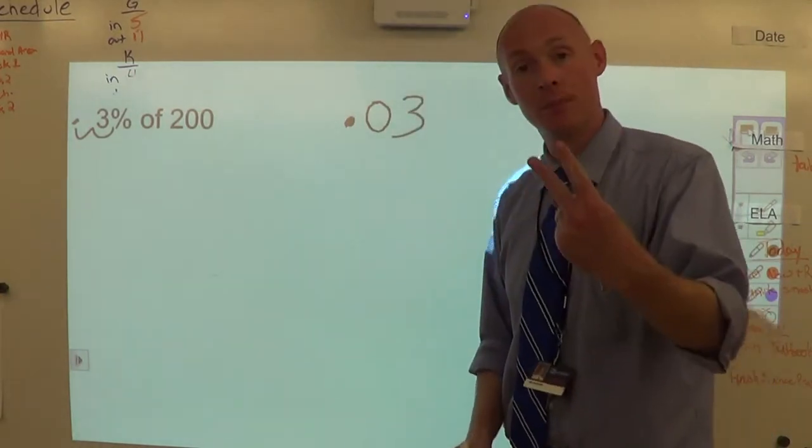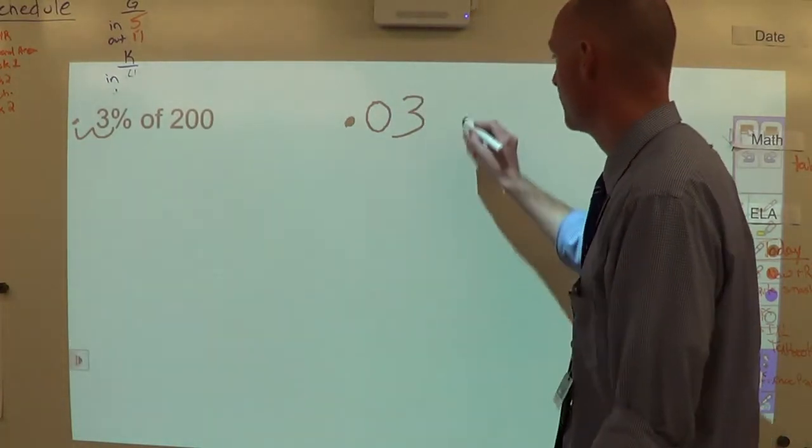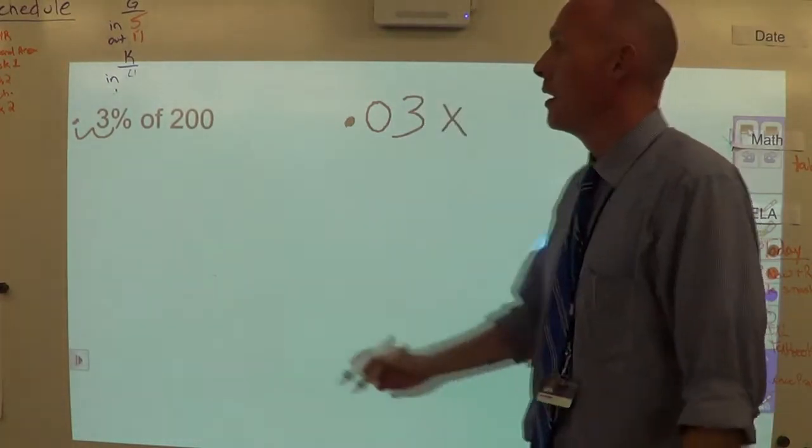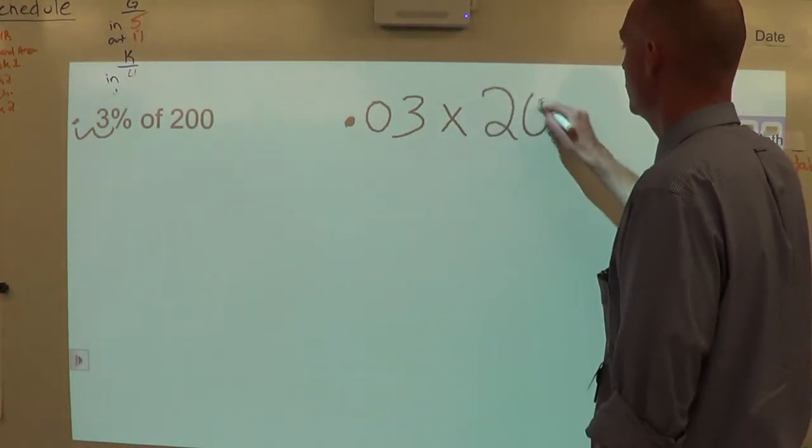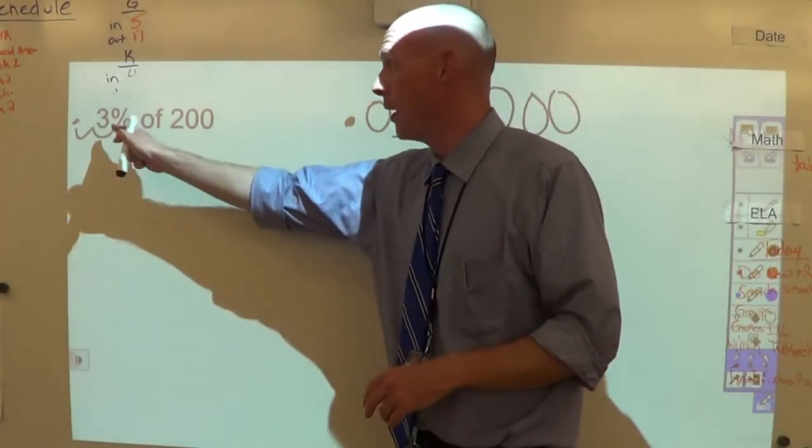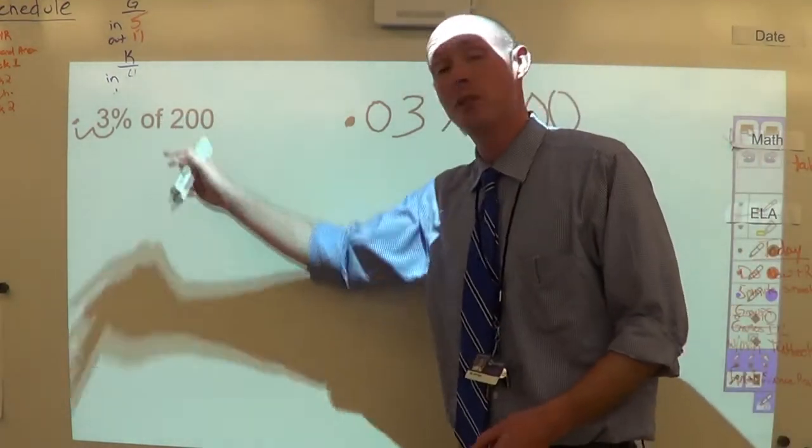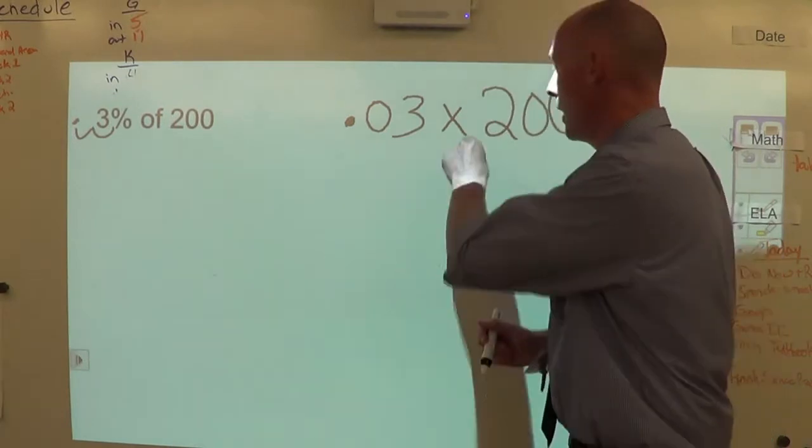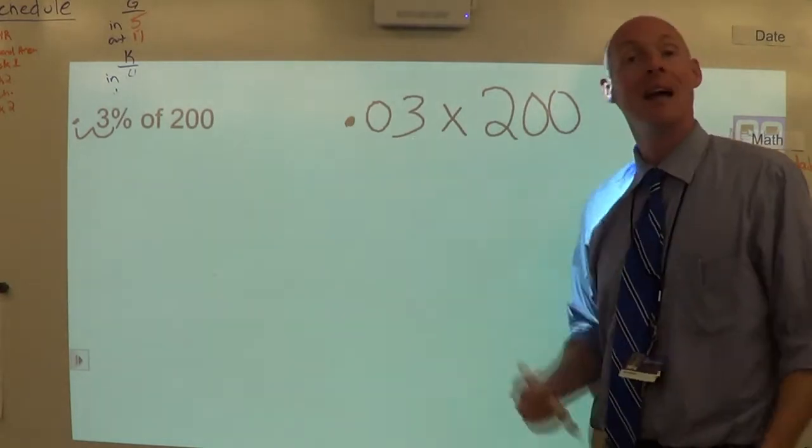Step two, change your word 'of' to multiplication, then your 200, well that's just 200. So just to recap, we use the first two rules: number one, changed our percent 3 percent to a decimal which left us with three hundredths. Step two, we took our word 'of', made it multiplication. Step three, 200 is just 200.